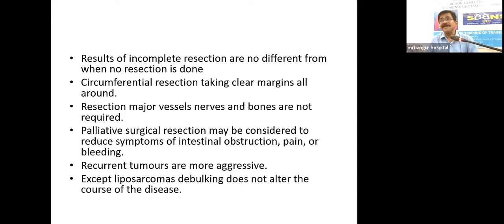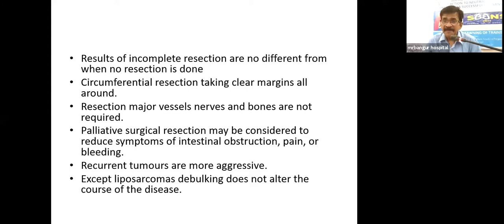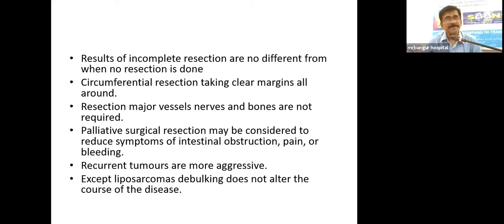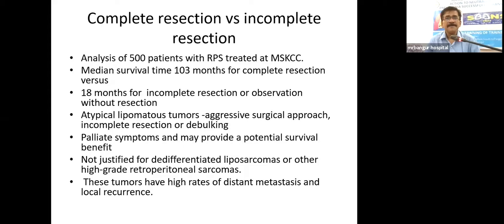When forced to do an incomplete resection, the results are no different from no resection — a circumferential resection with clear margins is important. Resection of major vessels, nerves, and bones is not required when there is advanced disease. Palliative resection is considered only for associated bowel obstruction, pain relief (debulking), or bleeding control. Except in liposarcomas, debulking does not alter the course of disease, and in poorly differentiated tumors, partial resection is not advisable.